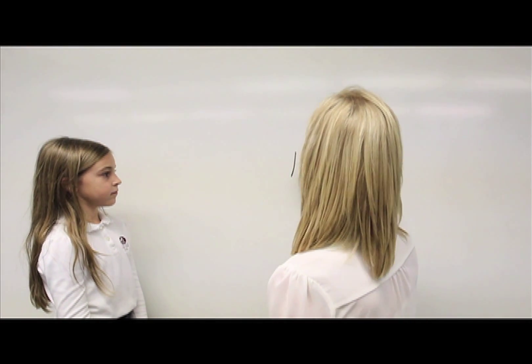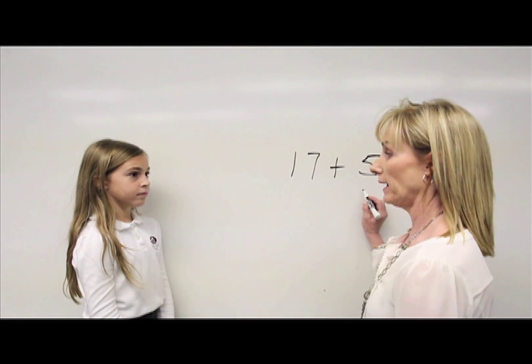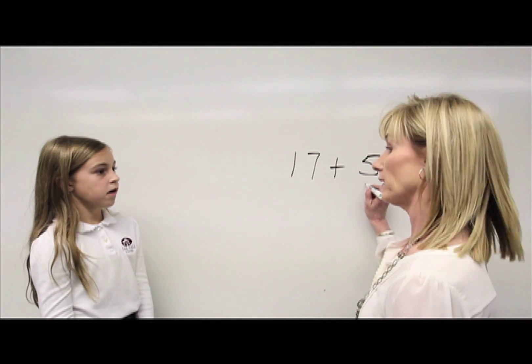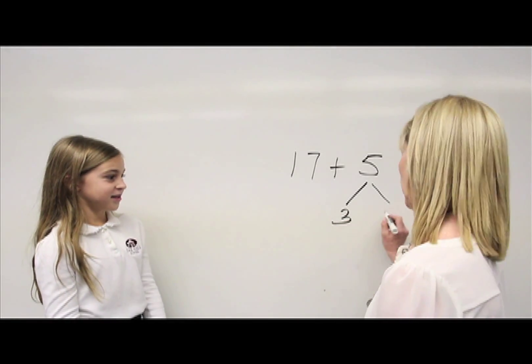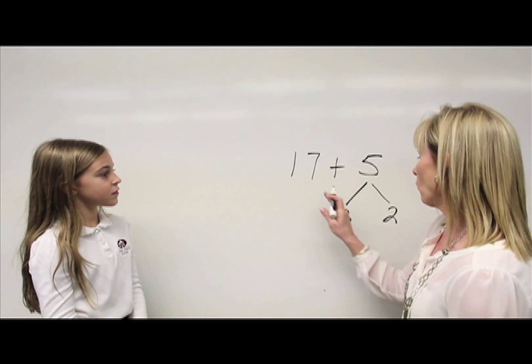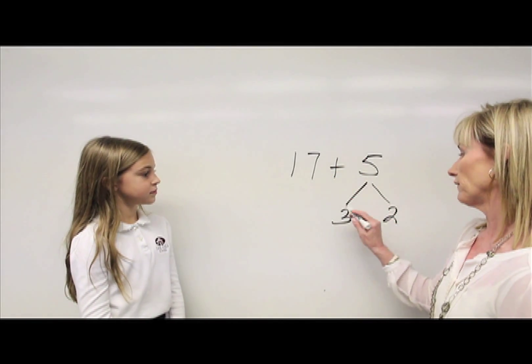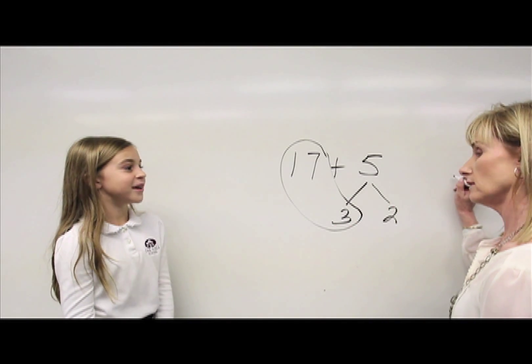I'm going to add 17 plus 5, so we want to make groups of 10. We're going to branch the 5 into a 3 and a 2, very good. And so if I wanted to add 17 plus 5 and branch 3 and 2, I would first add 17 plus 3, which equals 20.